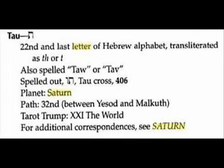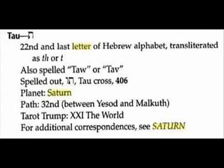In the Tarot it would be XXI — 21 — the World card. We're in the 21st century. This relates to Yesod and Malkuth, which are other dimensions. Do you see where this is going?